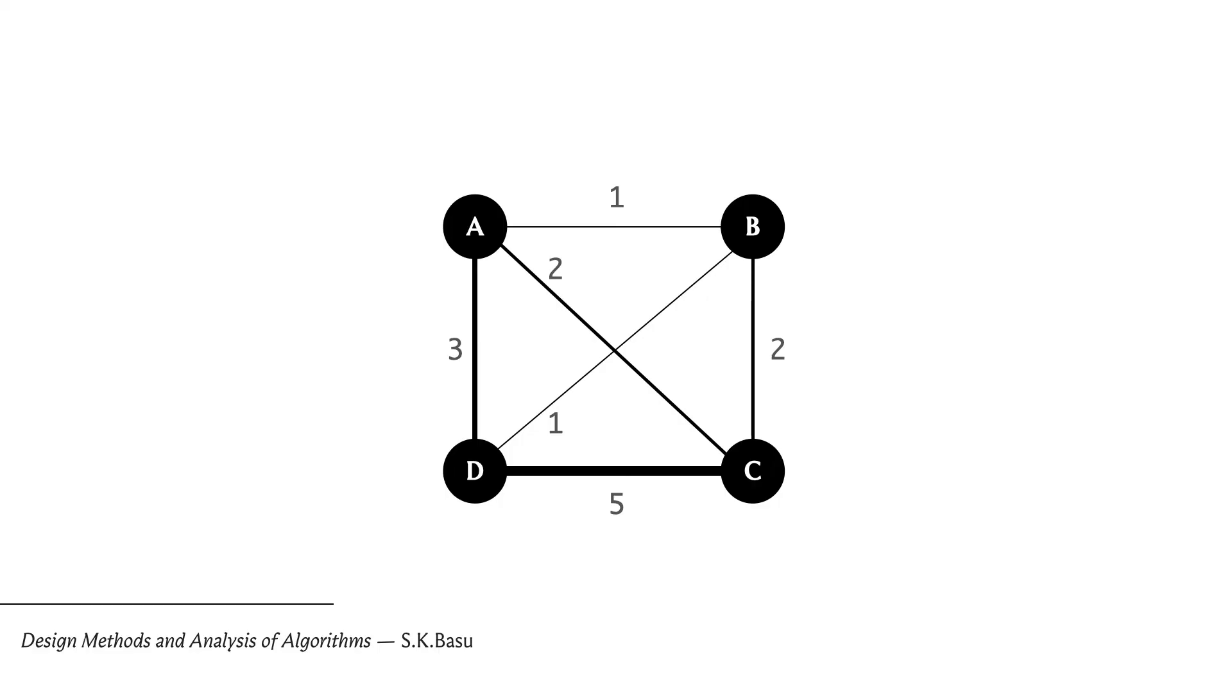Starting at a, instead of being distracted by the most tempting option to go to b, let's take a locally suboptimal option: go to c first. From a to c, then c to b, then b to d, then d to a. The total cost is two plus two plus one plus three, which is eight - better than the greedy approach.